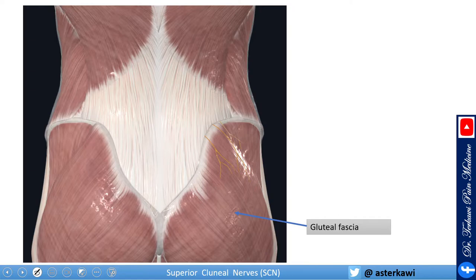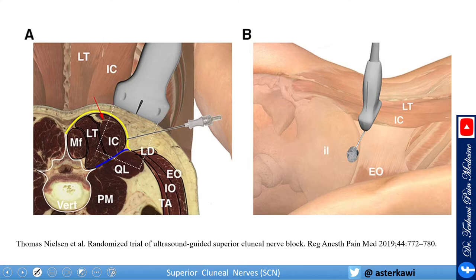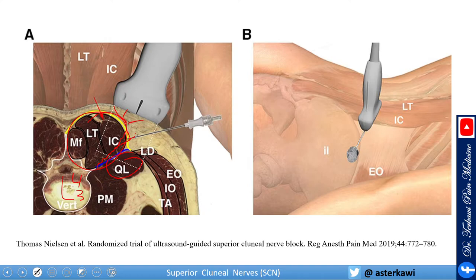Below the iliac crest, the nerve is above the gluteal fascia and the gluteus maximus and medius. In this axial cut around L4 or L3, you can see the erector spinae muscle and the quadratus lumborum. The nerves come from here, go through the muscle, and keep going above this level — just above the iliac crest, around L3.